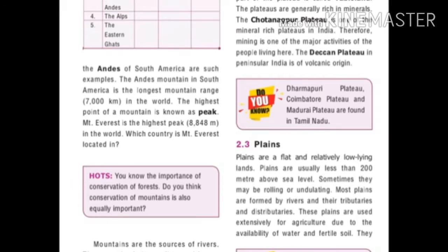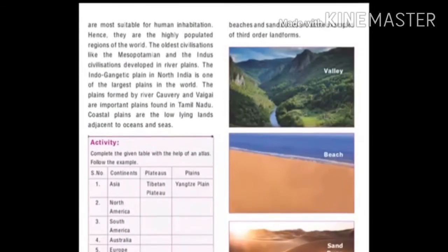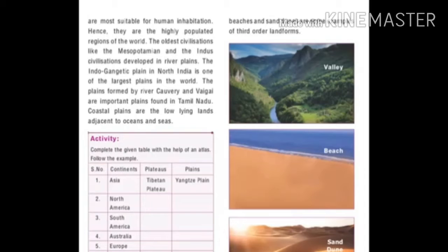Plains are usually less than 200 meters above sea level. Sometimes they may be rolling or undulating. Plains are used extensively for agriculture due to the availability of water and fertile soil.